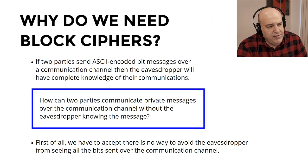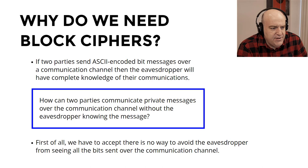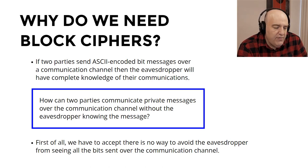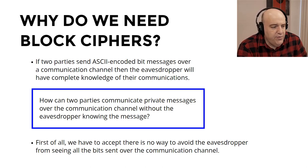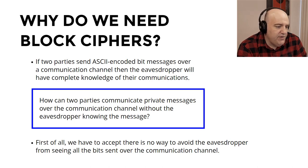This leads us to the question of why we need block ciphers. If two parties are sending ASCII-encoded messages over a communication channel, the eavesdropper will have complete knowledge of their communications. The question arises: how can two parties communicate over a channel and have private messages unknown to the eavesdropper? We must accept that there's no way to avoid the eavesdropper from spying. For example, a country that lays its own internet cables has complete control over those cables, and private citizens cannot stop the government from monitoring.